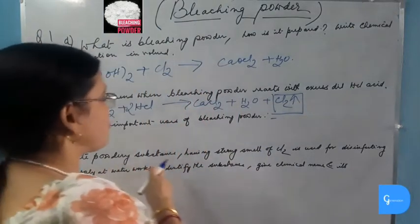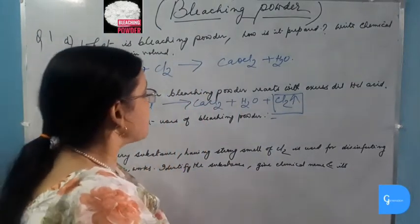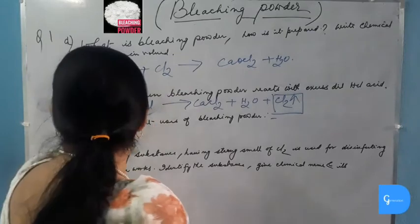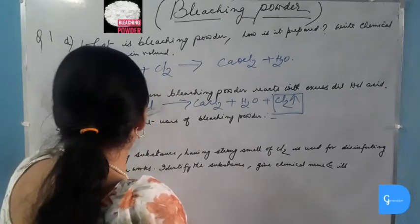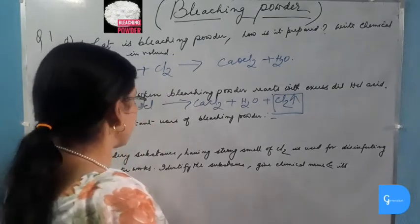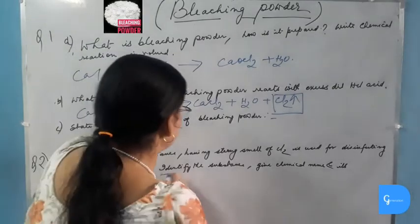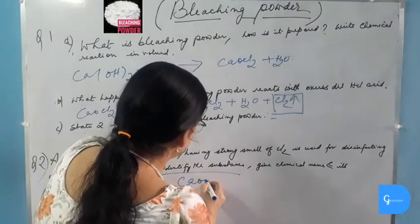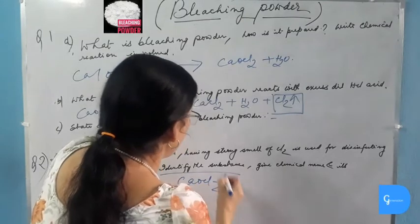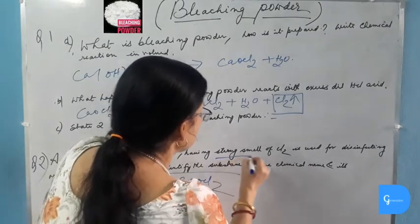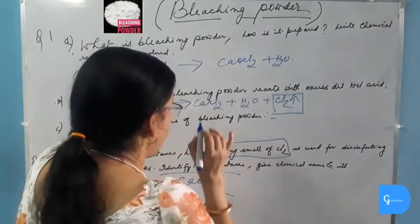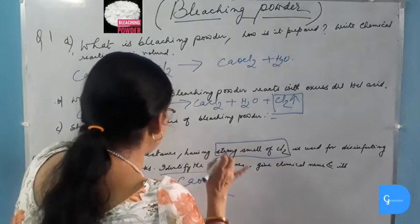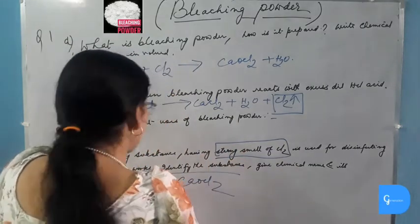A white powdery substance having a strong smell of chlorine is used for disinfecting water supply at waterworks. Identify the substance. The substance is bleaching powder, because bleaching powder has a strong smell of chlorine and is also used for disinfecting drinking water.